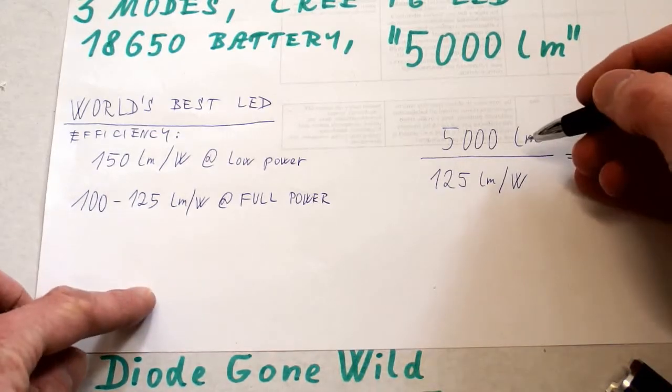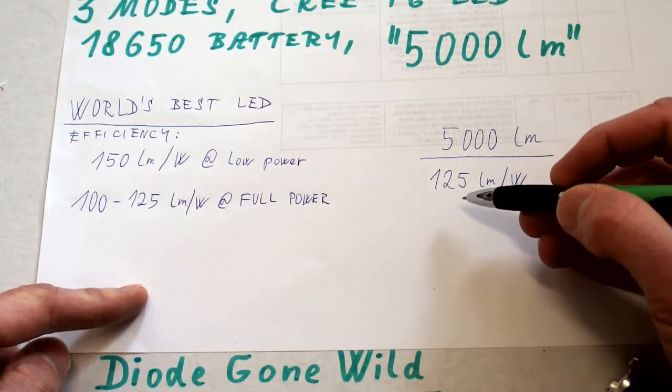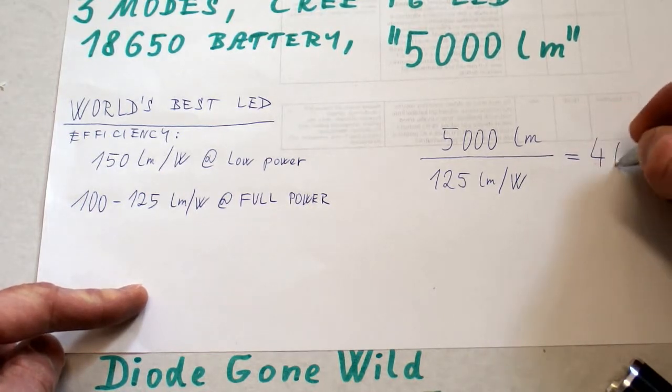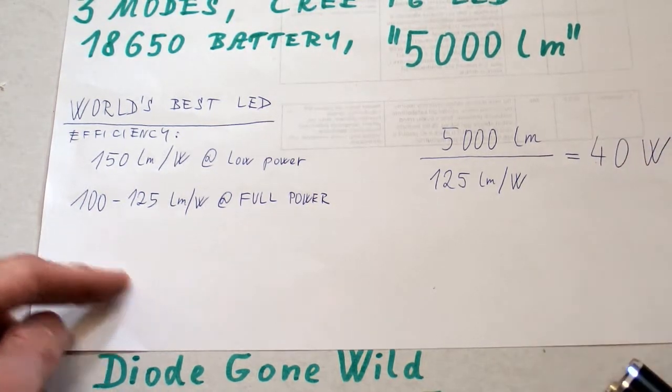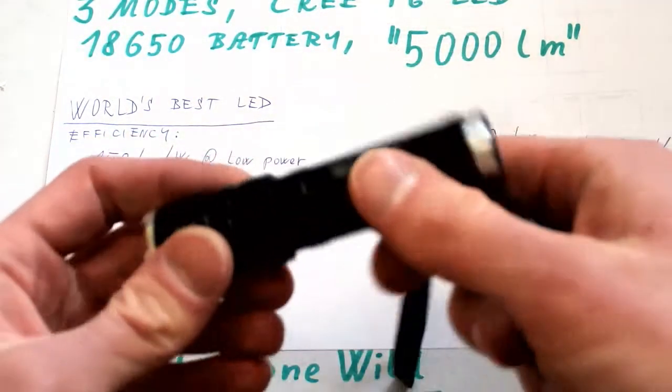And if the flashlight had 5000 lumens and the efficiency was the best one, which is 125 lumens per watt, then the power of the LED inside would have to be 40 watts. And that's nonsense. I really don't believe this has a 40 watt LED in it.